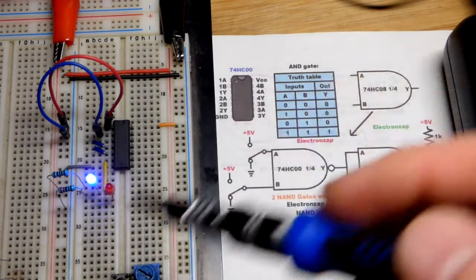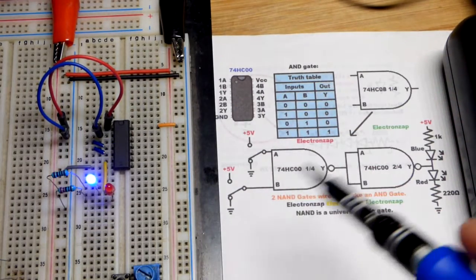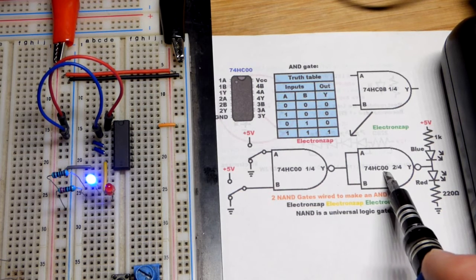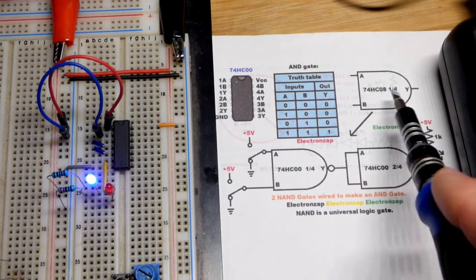So now in this video, we basically have an AND gate circuit here, but we are using a couple of NAND gates to make an AND gate.